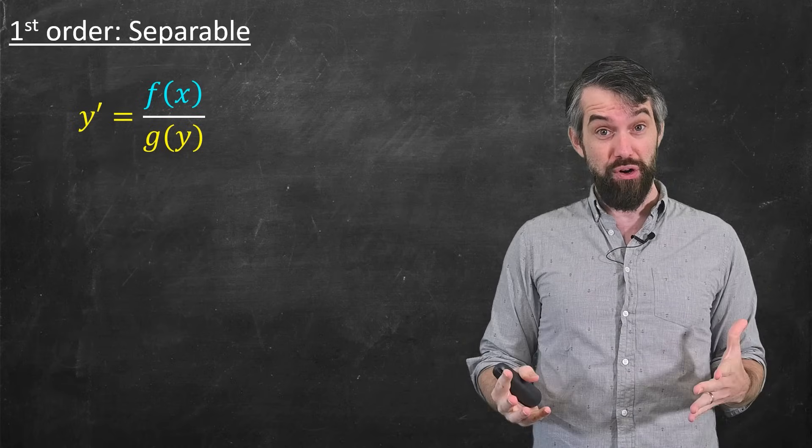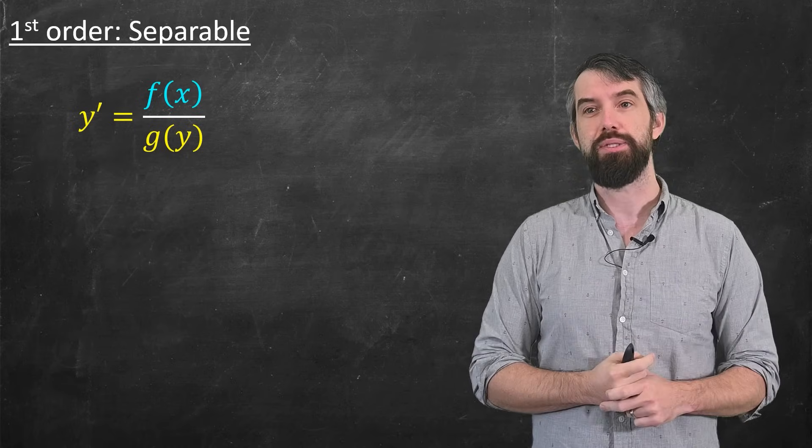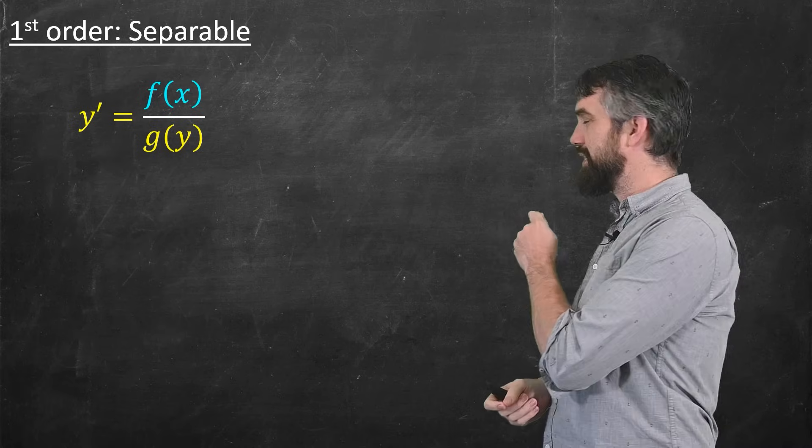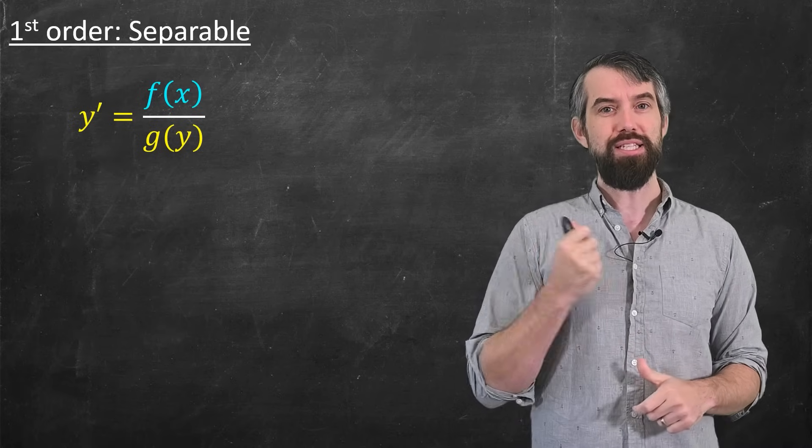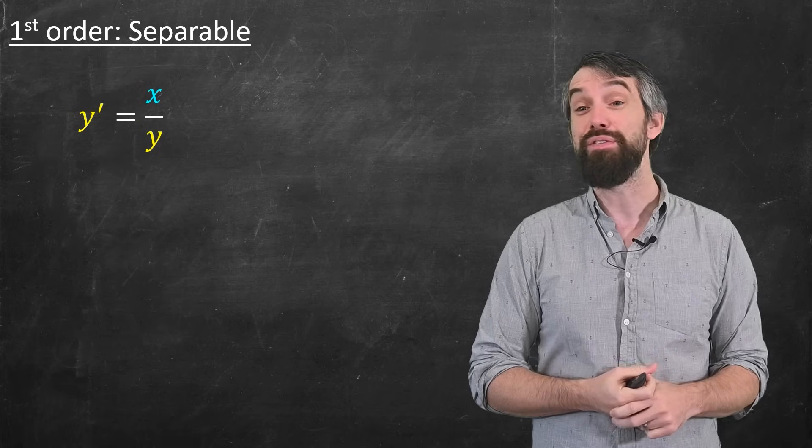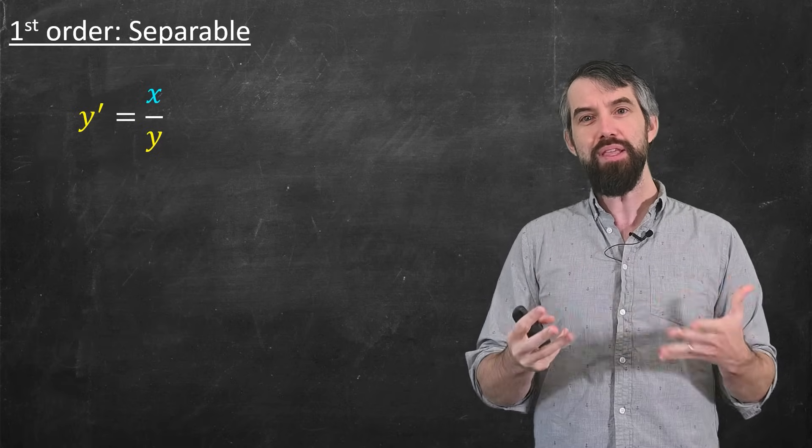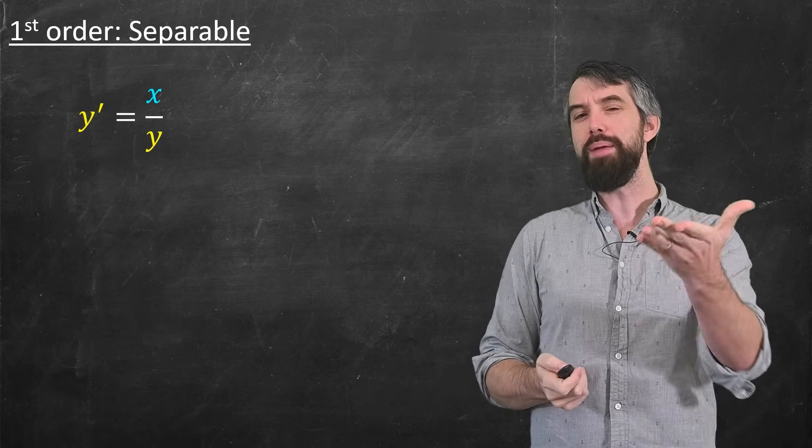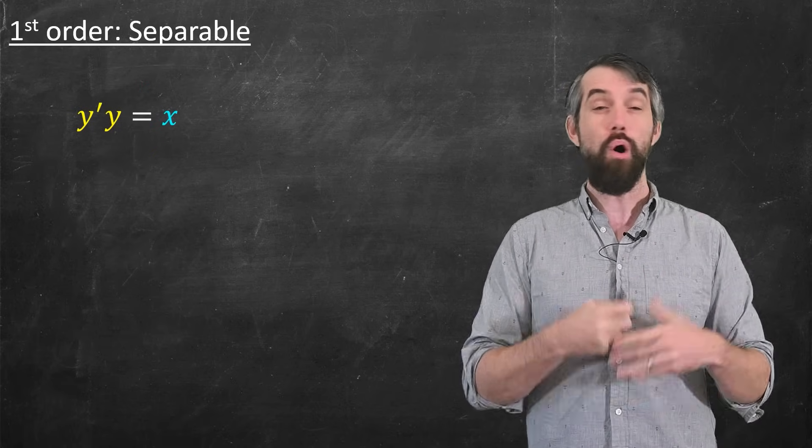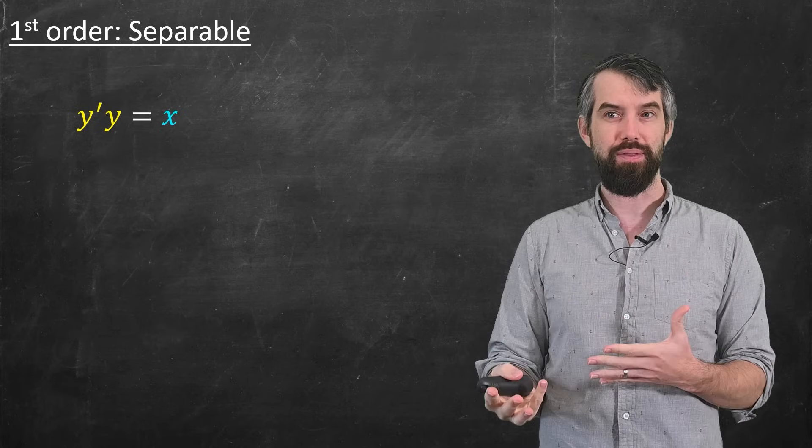Let's do first order first and study a couple of the special cases. The first one is separable equations. This is a nonlinear equation. It's something like x divided by y. It's something that you can split out, where if I multiply both sides by y, I have all the y's on the one side and all of the x's on the other.